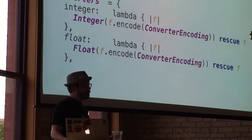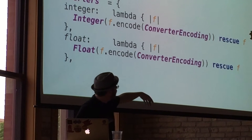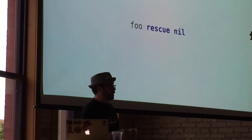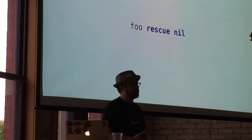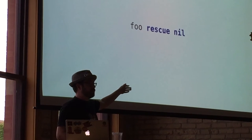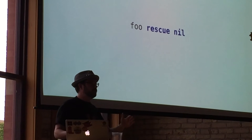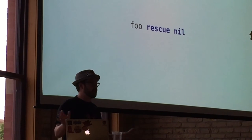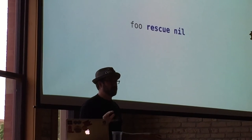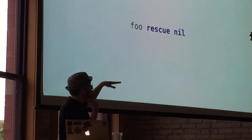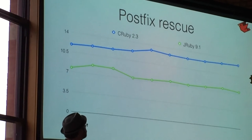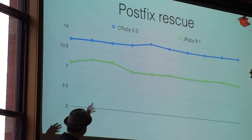So we actually introduced an optimization where we see the rescue path form or we see a simple expression. So rescue and then the result is just a literal value or a local variable or something very simple. Well, we set a bit on that thread saying don't create a stack trace. We're downstream from an exception handler that doesn't care about the exception. It's going to throw it away. Don't generate any of that extra overhead and extra logic. So we can totally just eliminate 99% of the overhead of exceptions.